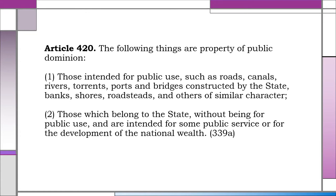Characteristics of properties of public dominion. One, they are outside the commerce of man and cannot be leased, donated, sold, or be the object of any contract. Two, they cannot be acquired by prescription — no matter how long the possession of the properties has been, there can be no prescription against the state regarding property of the public domain. Three, they cannot be registered under the land registration law and be the subject of a Torrens title. If erroneously included in a Torrens title, the land involved remains property of the public domain.